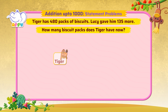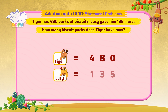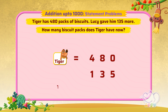Tiger has 480 packs of biscuits. Lucy gave him 135 more. How many biscuit packs does Tiger have now?